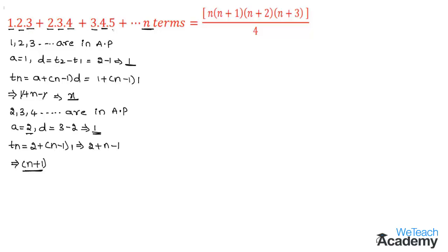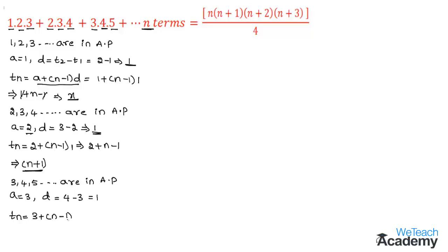Now let us consider the third factor of the series. We have 3, 4, 5 in arithmetic progression, so a = 3 and d = 4 − 3 = 1. The nth term is tn = 3 + (n−1)×1 = 3 + n − 1 = n + 2. Therefore the nth term of the series is the product of all three factors: n(n+1)(n+2).